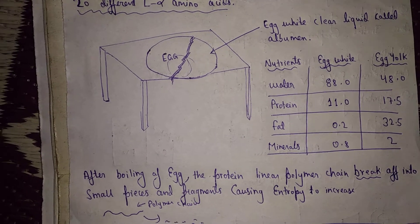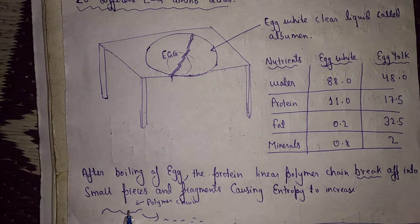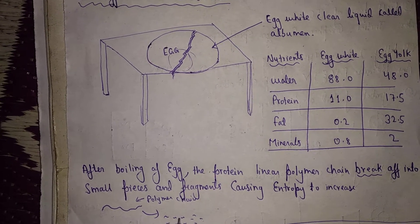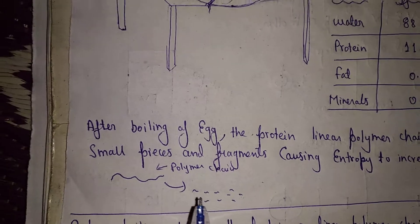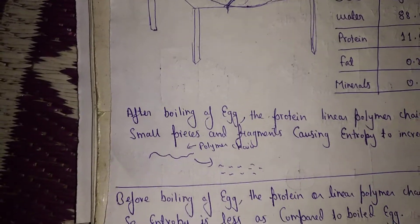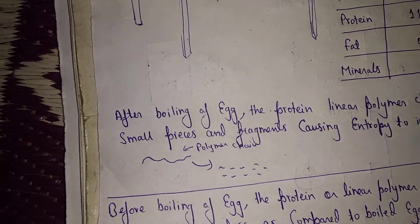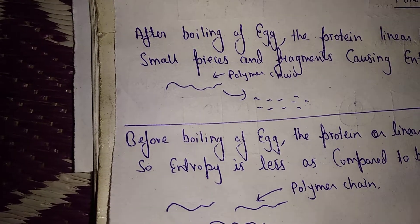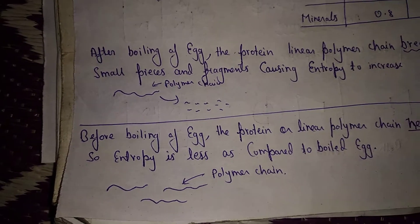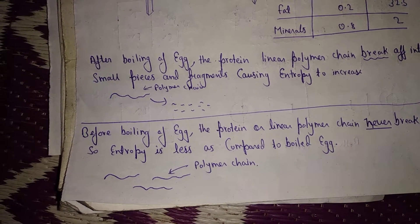Suppose this one is the polymer chain. After heating or boiling of the egg, it breaks into small fragments, which results in an increase in entropy. Before boiling of the egg, the protein or the linear polymer chain never breaks. So entropy is less as compared to the boiled egg.